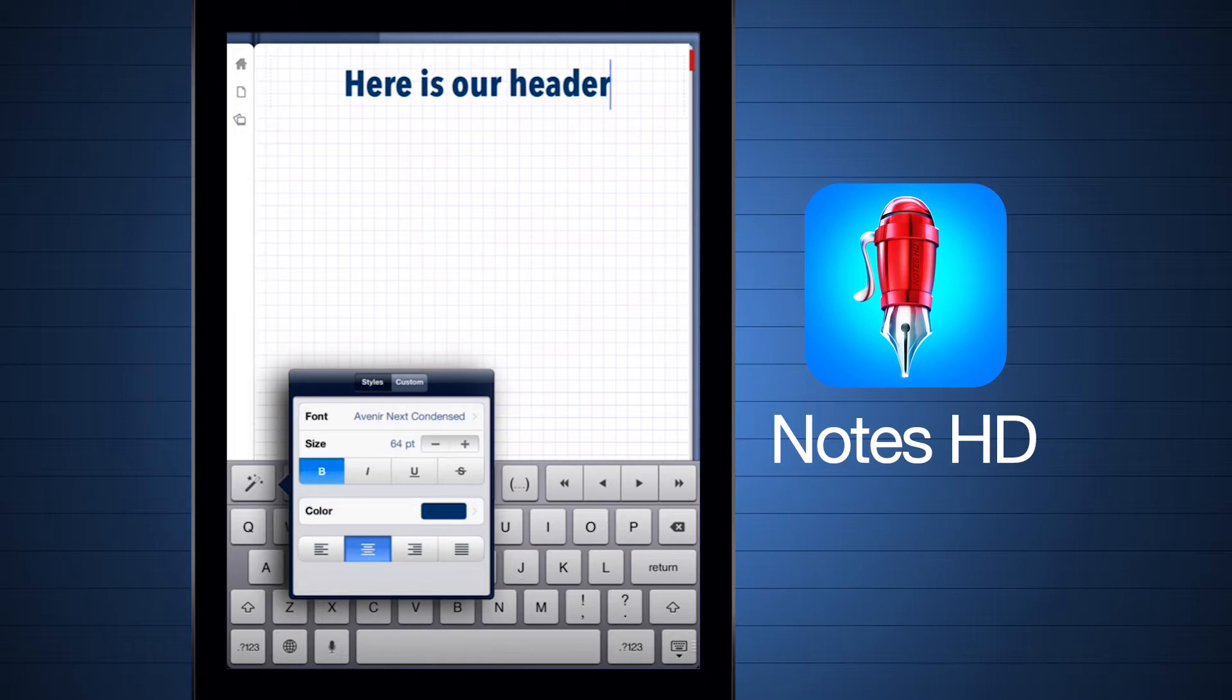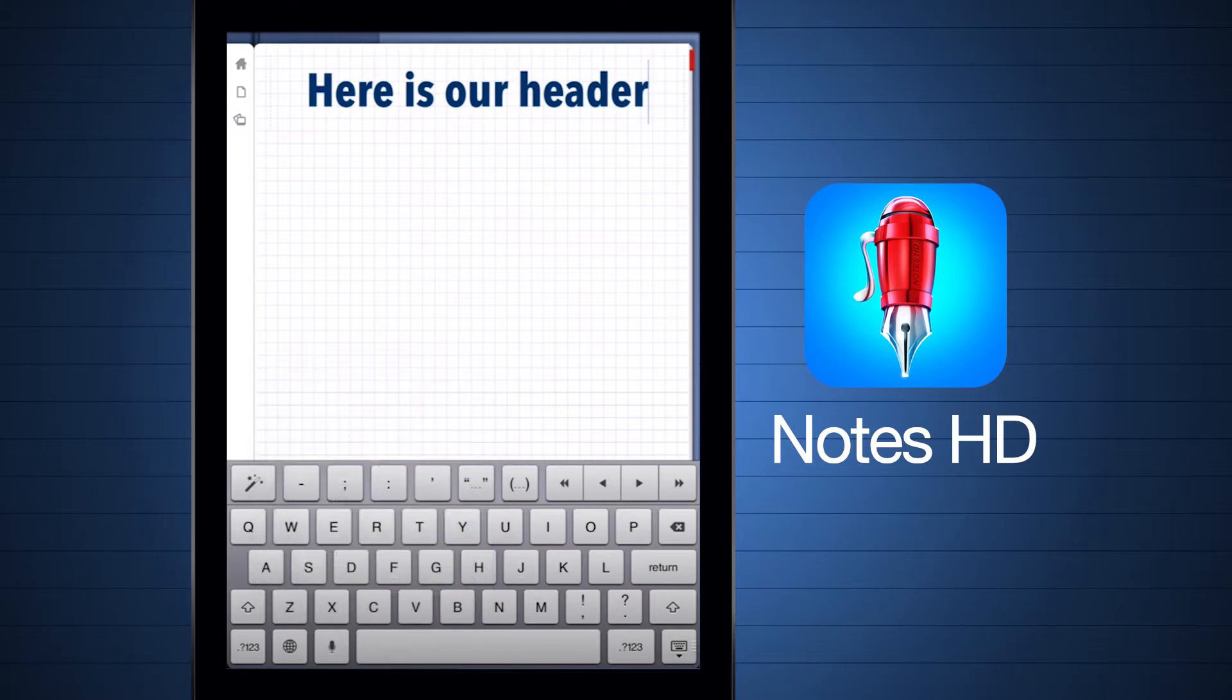Here we can adjust the font size, we've got it bolded, and we've even adjusted the orientation to the center. Now if I hit return and bring my text back into the middle, I can even change the style of the next sentence of text.